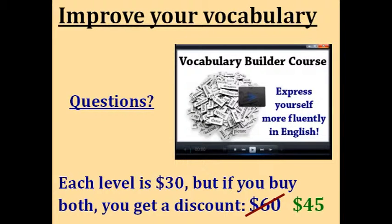Another question: my English level is intermediate — which level of the course is best? If you're intermediate, you could really go either way. Level one will help you get a solid base in the most important vocabulary and learn some new words within each lesson's topic. In level two, I do talk a bit faster and the words are more advanced, but I think someone at the intermediate level can do level two as well. It might be a little more of a challenge, but it's certainly possible. Both levels are good for an intermediate learner — it depends on whether you want to reinforce basic knowledge or take on more of a challenge.